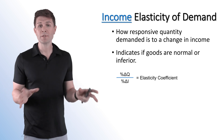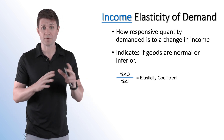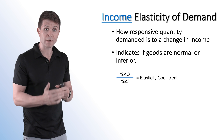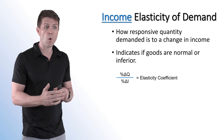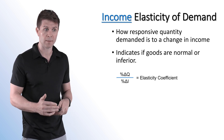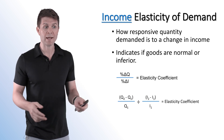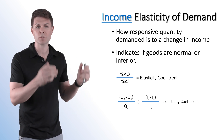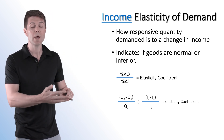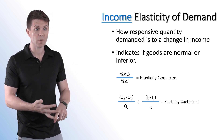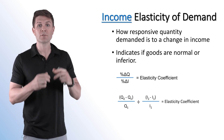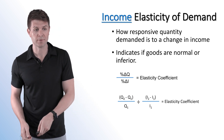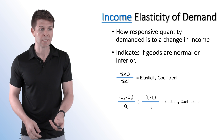The formula for income elasticity is very similar to that of demand elasticity. It's the percentage change in quantity over the percentage change in income: (Q2 − Q1) / Q1, divided by (I2 − I1) / I1. It's the percentage change in quantity divided by the percentage change in income.